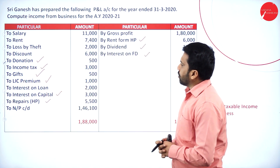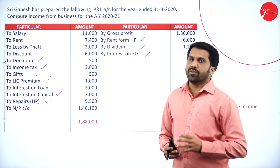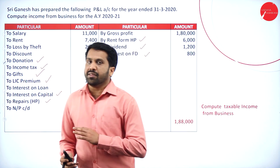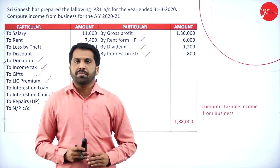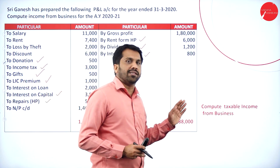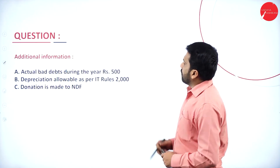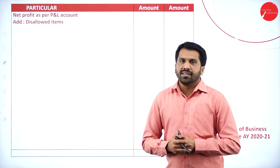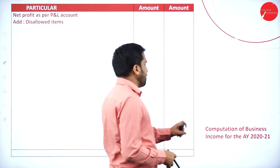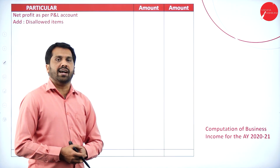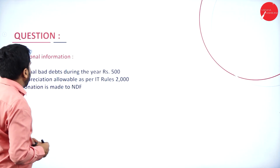Not only business income will we do — we will do total income also. Remember, in your examination they will not ask you total income or tax liability. As per your syllabus, you have only computation of business income. The heading must be: computation of business income for the assessment year 2020-21. We will go through it one by one.